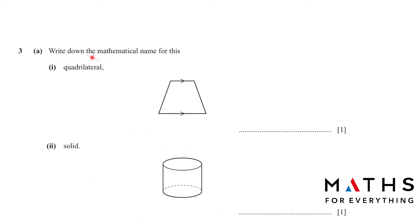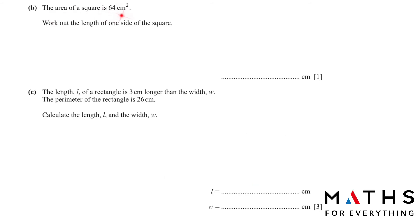Question number 3A, write down the mathematical name for this quadrilateral. Two sides are parallel, right? So this is a trapezium. And moving on to two, what is the name of this solid? This is a cylinder, very easy question. Part B, the area of a square is 64 square centimeter. Work out the length of one side of the square. Area is equal to the length of the side, whatever it is, square. Now area is 64 and we got length square. We want to find the length. Whenever there is a square and we want to shift it to the other side, we write square root. So square root 64 is equal to our length, which will give us 8 centimeter.